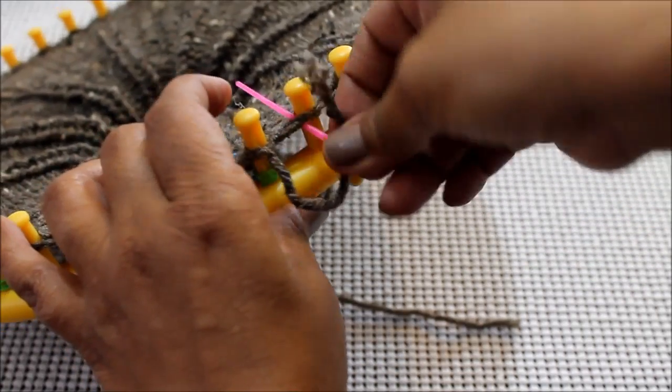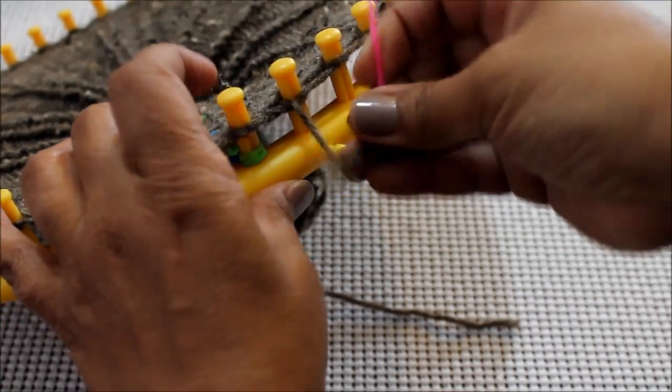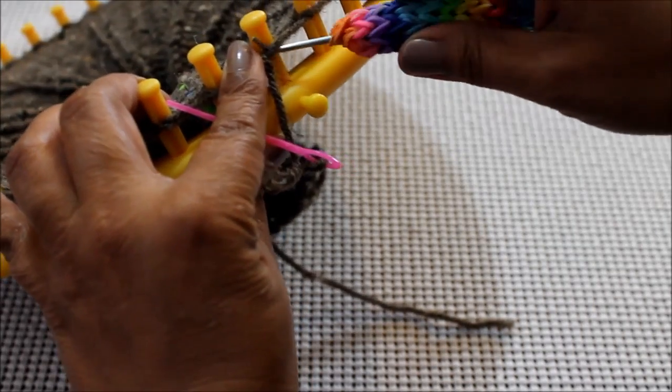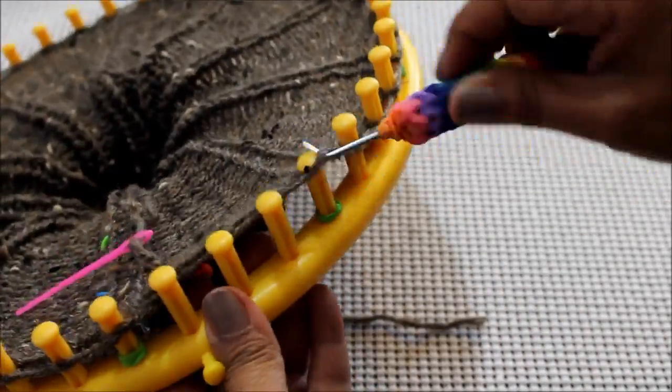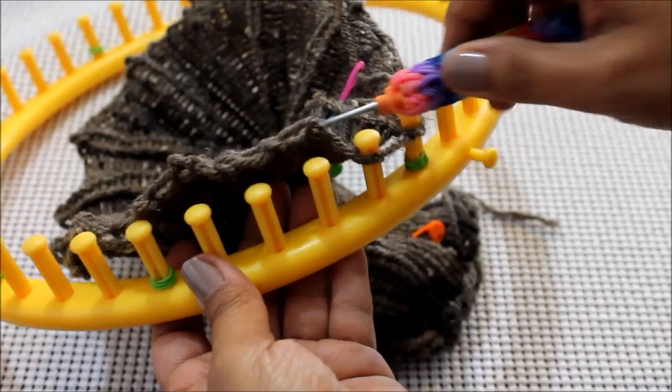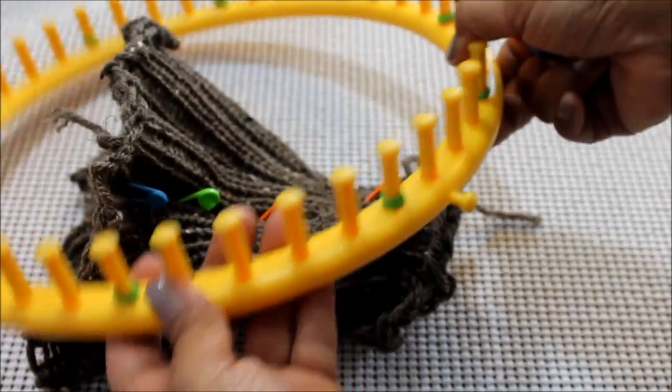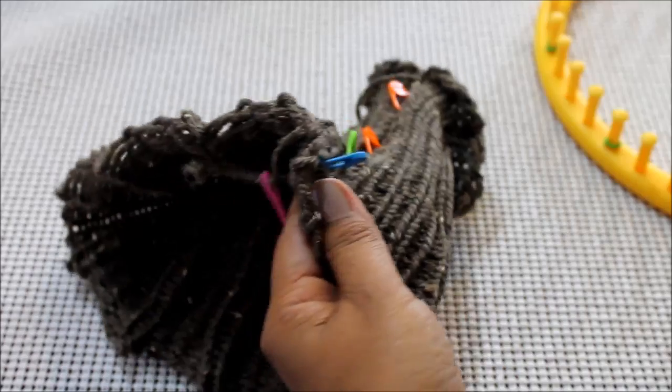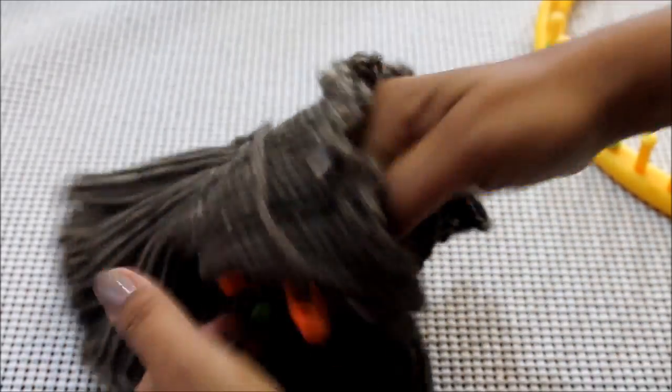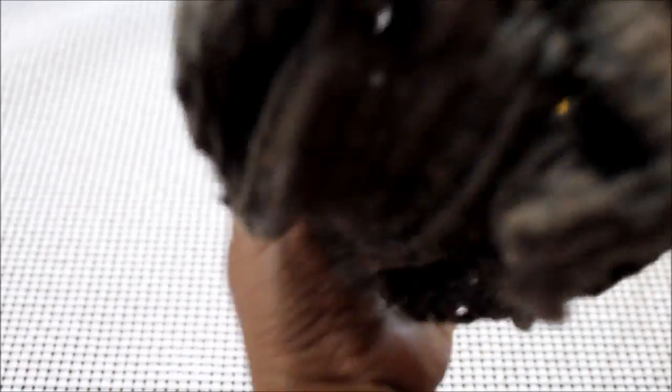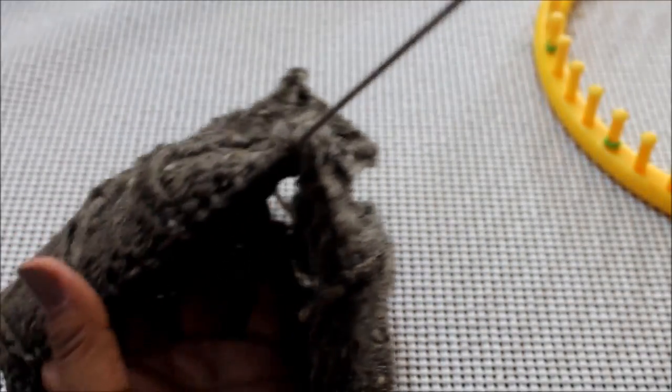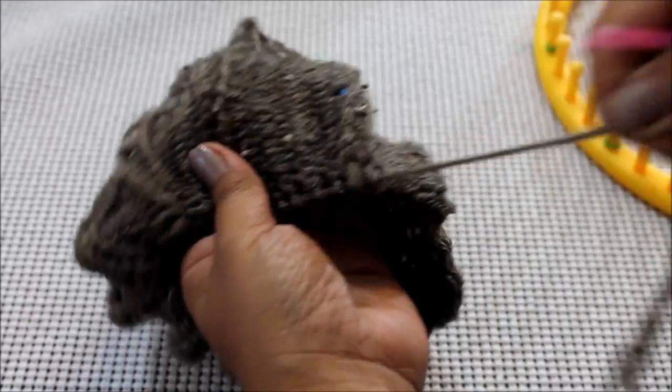So once you have the working yarn and it's been fed through all of the loops, you can take your hook and start taking the loops off the pegs. And once your hat is off the loom, then take the needle in and reverse the hat so that you have the inside out. And pull your working yarn to close the hat, the top of the hat.